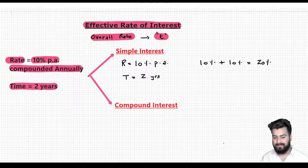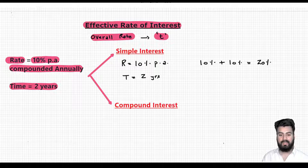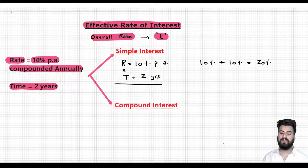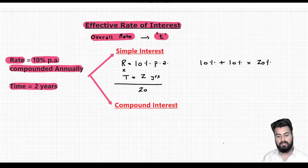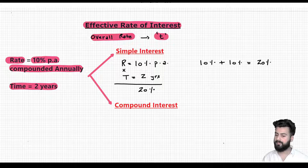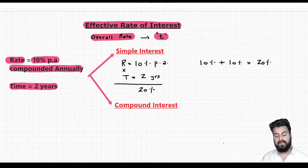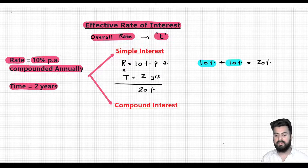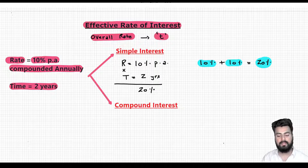Now if you want to formulate a direct way to calculate effective rate of interest, you could directly multiply the two values: 10% per annum into 2. So if you multiply the two numbers you will get the effective rate of interest directly — that could be another way. But I want you to understand the visual approach as well. Since I am getting 10% at the end of every year, in 2 years the effective rate of interest is going to be 20%.